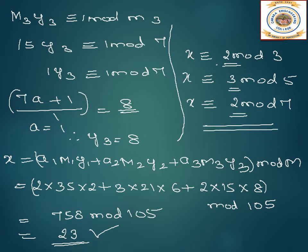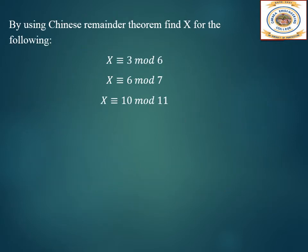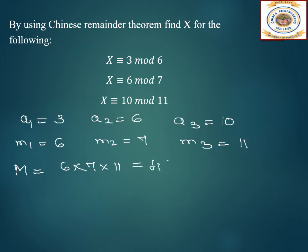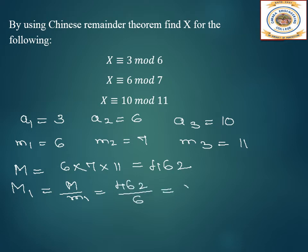Let us consider another example. Here we have x is congruent to 3 mod 6, x is congruent to 6 mod 7, and x is congruent to 10 mod 11. We need to find the value of x. First let us list out what is given: a1 is 3, a2 is 6, and a3 is 10. Small m1 is 6, m2 is 7, and m3 is 11. Capital M is 6 into 7 into 11, which gives 462. Capital M1 is 462 divided by 6, which equals 77.